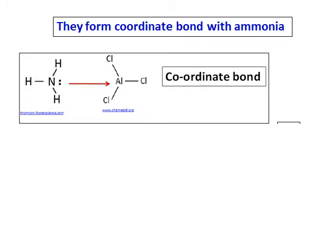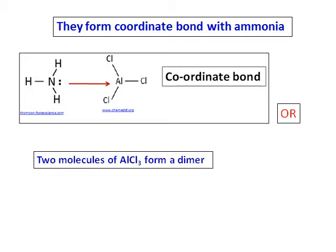There is another way aluminum chloride can stabilize itself. Two molecules of aluminum chloride can combine and it can form a dimer.